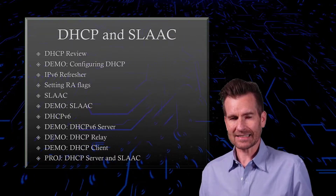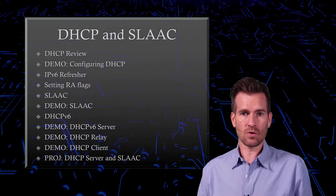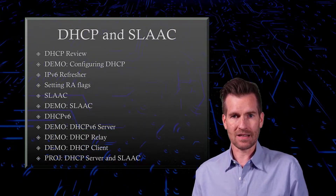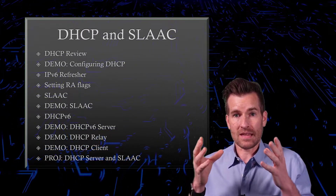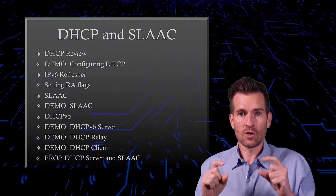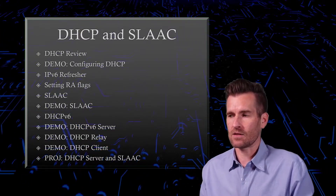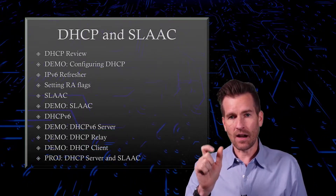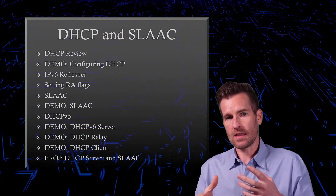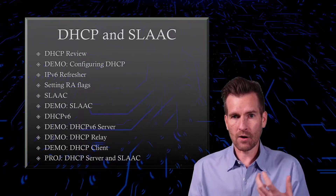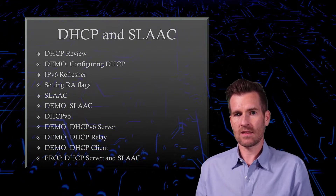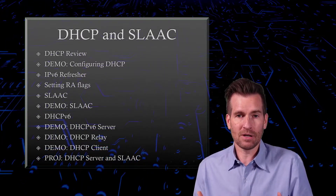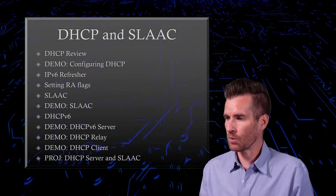In my last class, I went real in-depth into IP version 6, so I'm not going to take that real in-depth look here, but hit the highlights of what we're going to need to know to configure the Cisco equipment. We're going to take a look at how to set the RA flags — the router advertisement flags — so that client machines know what to do to get the proper information they need to get onto the network.